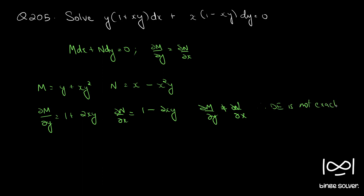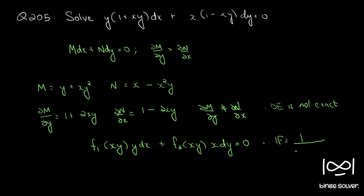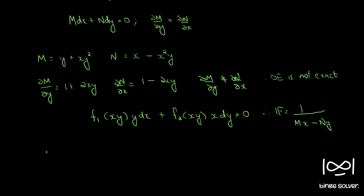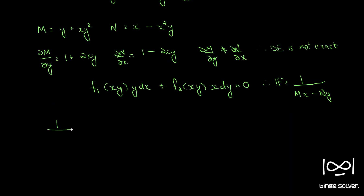Now we have to find an integrating factor to convert it into an exact equation. The rule we can use here is that the given function is in the format f₁(xy)·y dx + f₂(xy)·x dy = 0. Therefore the integrating factor in such cases can be found using 1/(Mx - Ny). So 1/(Mx - Ny) gives the integrating factor equal to 1/(xy + x²y²).